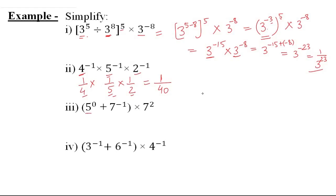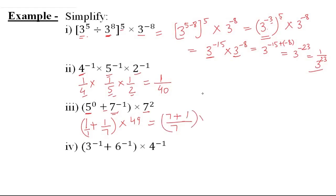Third: 5 raise to the power 0 plus 7 raise to the power negative 1 multiplied by 7 raise to the power 2. No multiplication laws apply here due to the plus sign. 5 raise to the power 0 equals 1; 7 raise to the power negative 1 is 1 upon 7; and 7 raise to the power 2 is 49. So we get 1 plus 1 upon 7, bracket multiplied by 49. Taking LCM 7: we get 7 plus 1 upon 7, multiplied by 49. This gives 8 upon 7 multiplied by 49, which reduces to 8 multiplied by 7, giving the final answer 56.